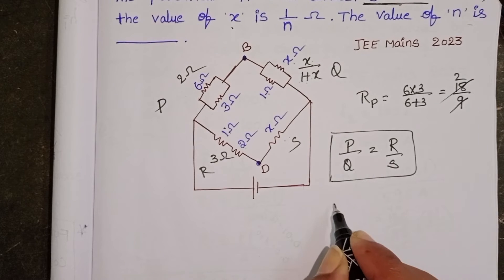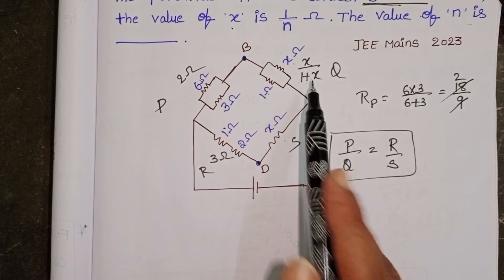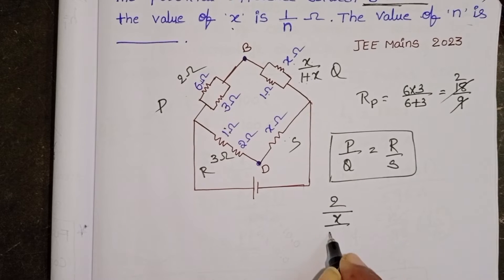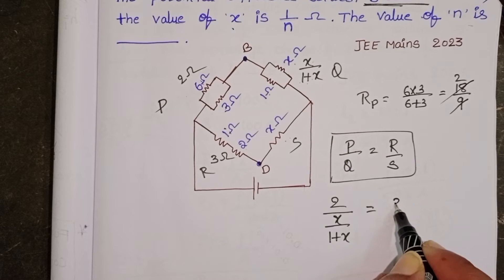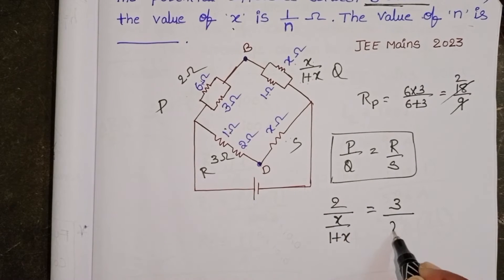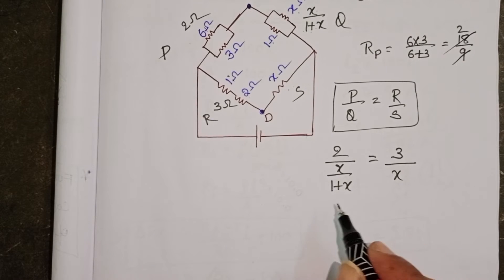Here P equals 2 ohm. Q is X by 1 plus X. R equals 3 ohm. And S equals X ohm. Now simplify this.